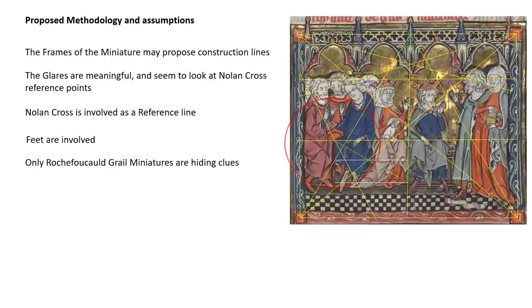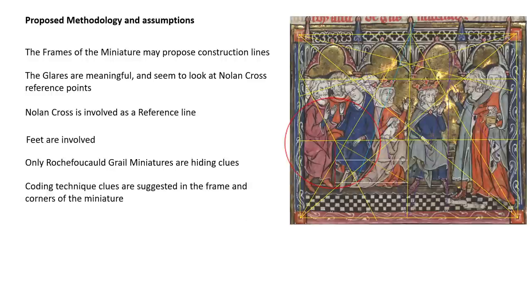Only the Rochefoucauld Grail is hiding clues. I've tried and worked for a couple of years on all the available pictures on the website from libraries and scans. It's only the Rochefoucauld Grail, and only selected pictures at that. But the small sample we've been given has been extremely efficient in producing results linked with Oak Island — coding techniques, clues, and how at least part of the coding is happening.